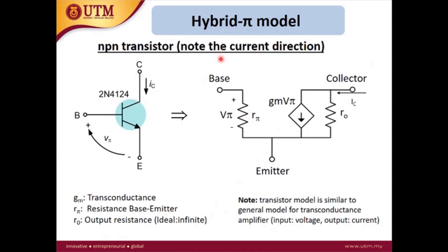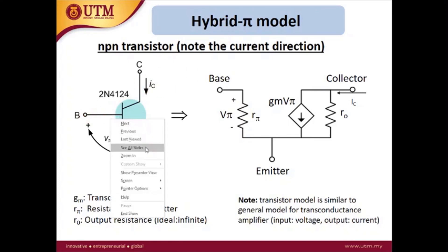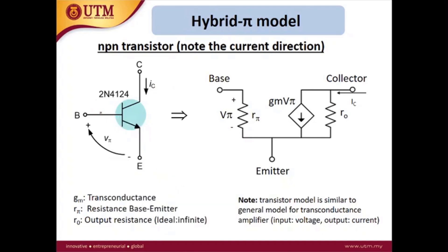The hybrid PI model: the left-hand side diagram shows the symbol of the BJT with its three terminals — base, collector, and emitter. In general, we consider the base terminal as the input terminal and the collector terminal as the output terminal. The collector current is the output and the base current is the input. However, for the hybrid PI model, instead of considering the base current, we use the voltage between base and emitter — VPI — as the key variable.